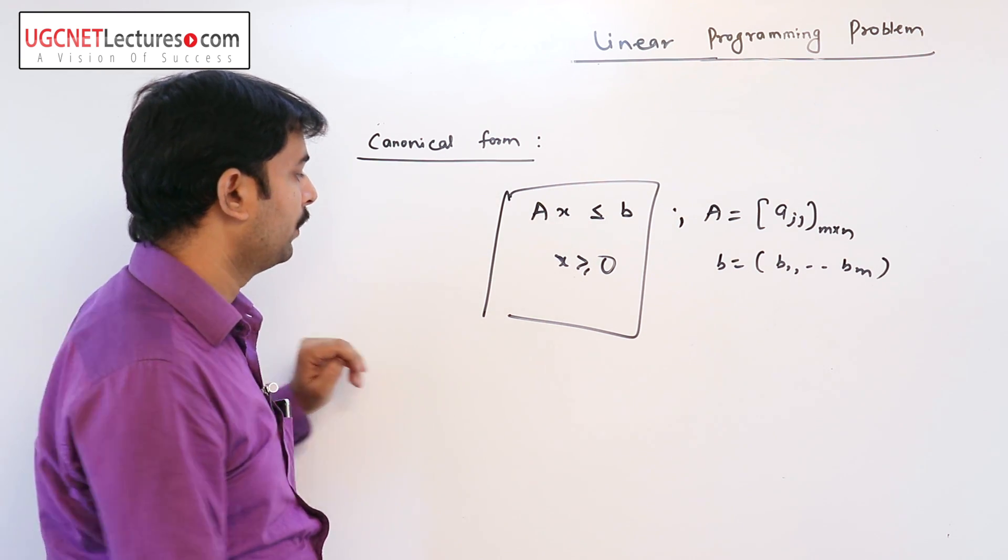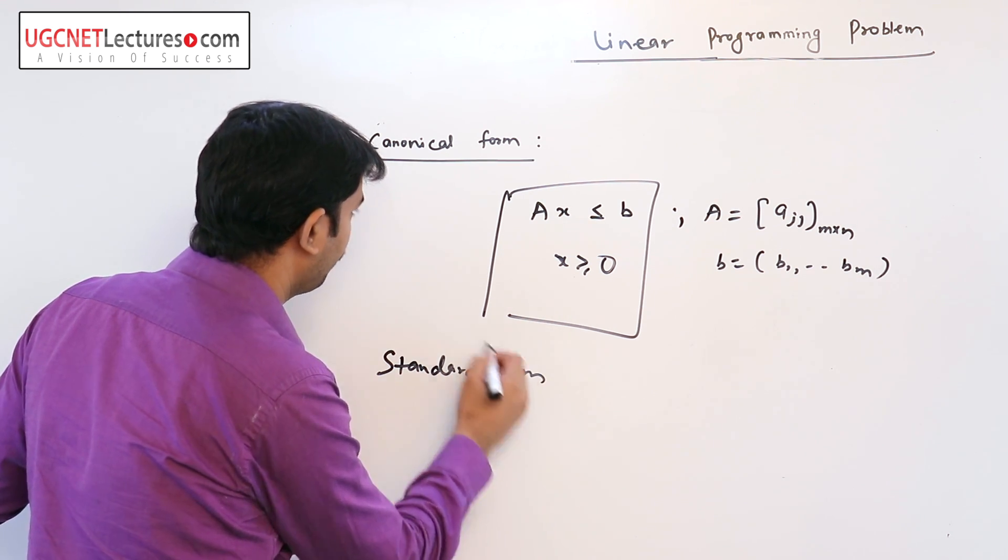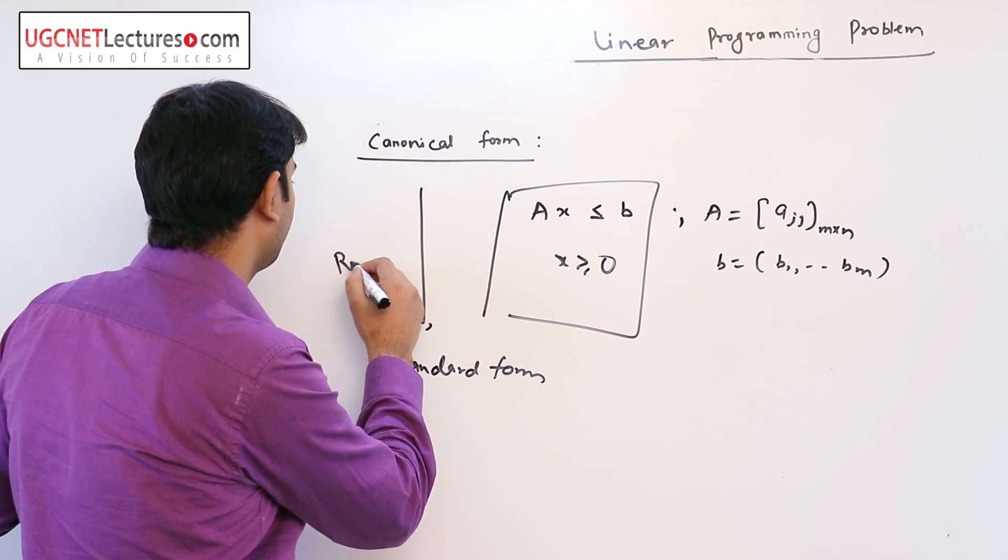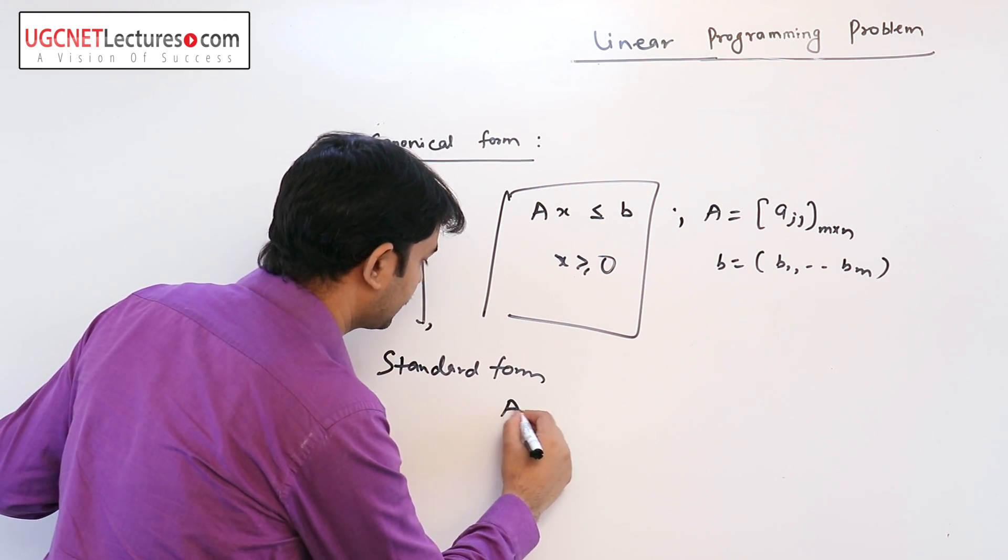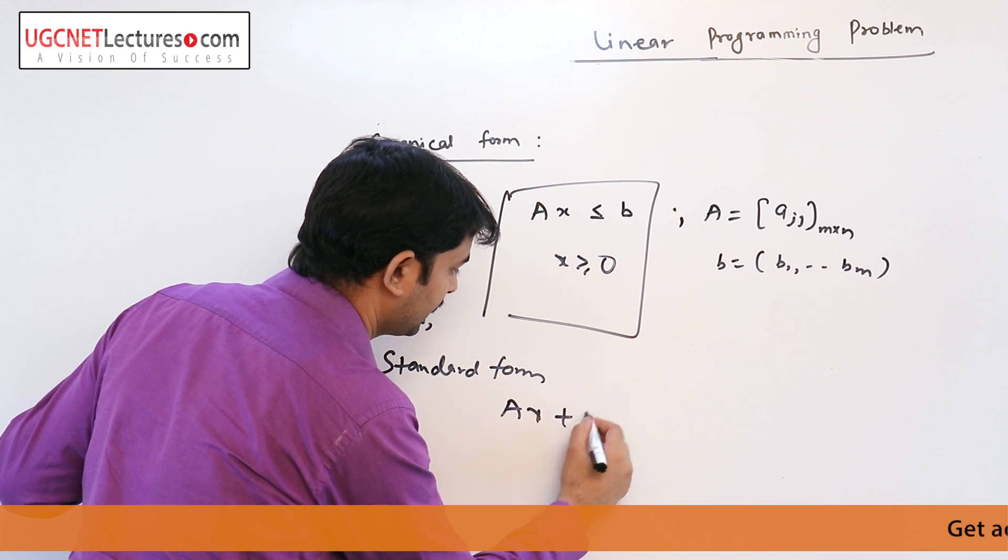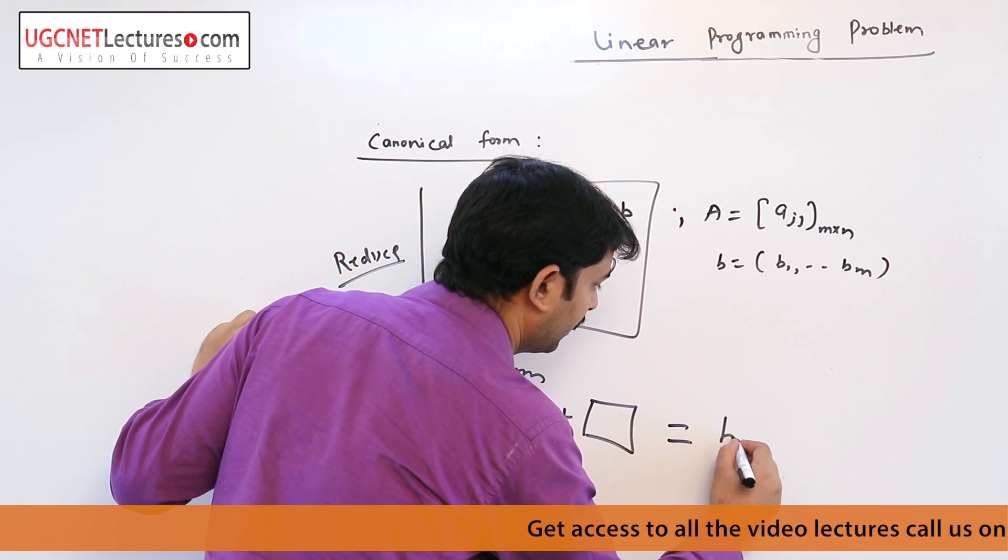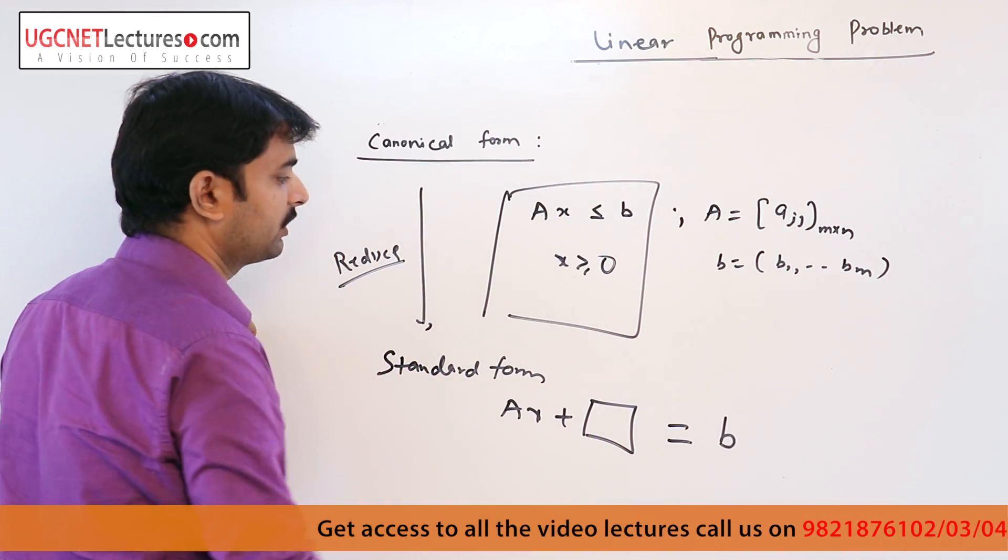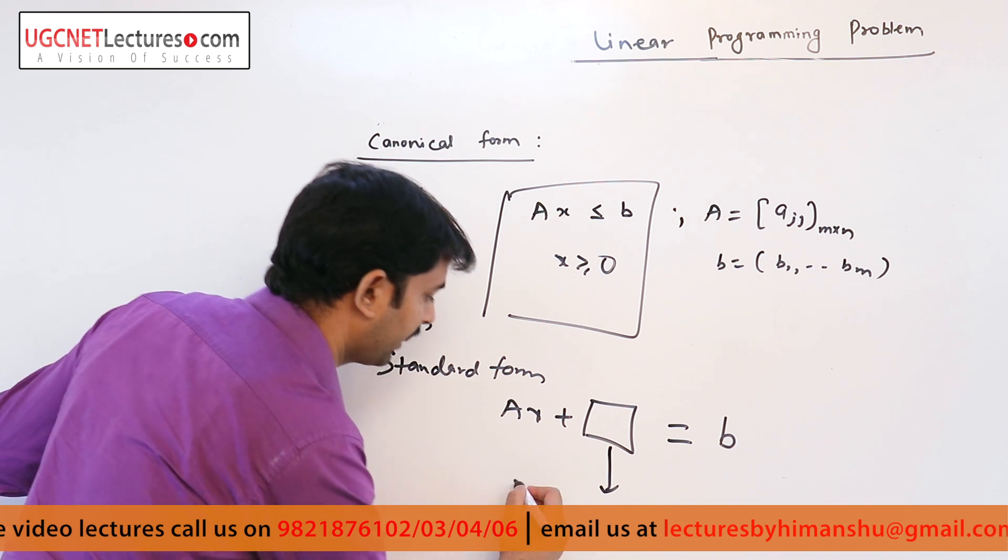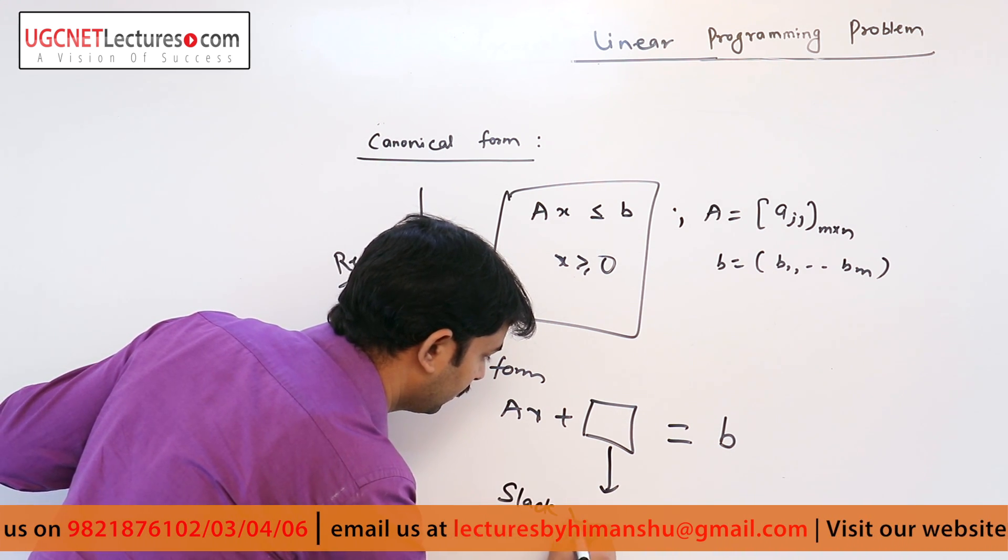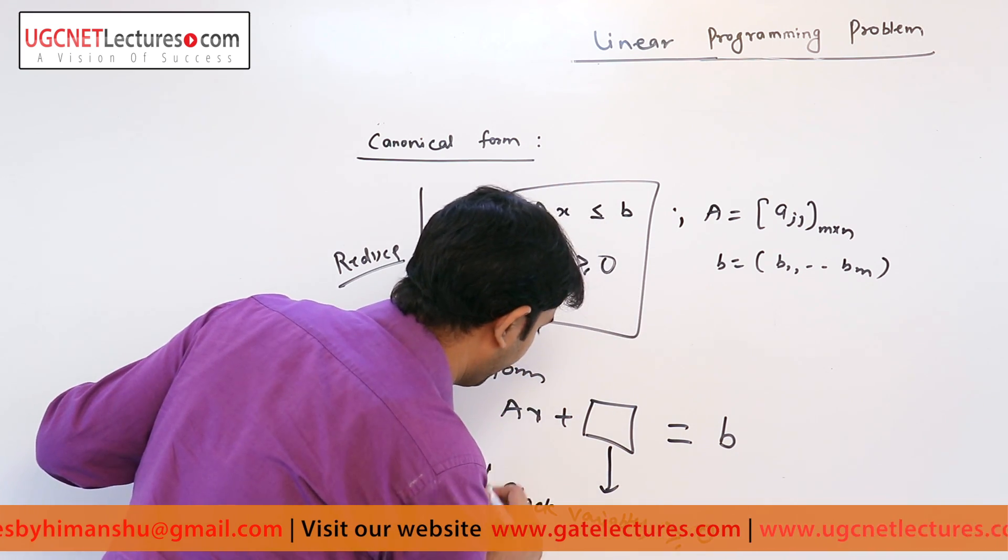Reducing canonical form to standard form, as we already see that A x plus slack variable and the sign of less than equal to is changed into equal to sign, here all the slack variables are non-negative.